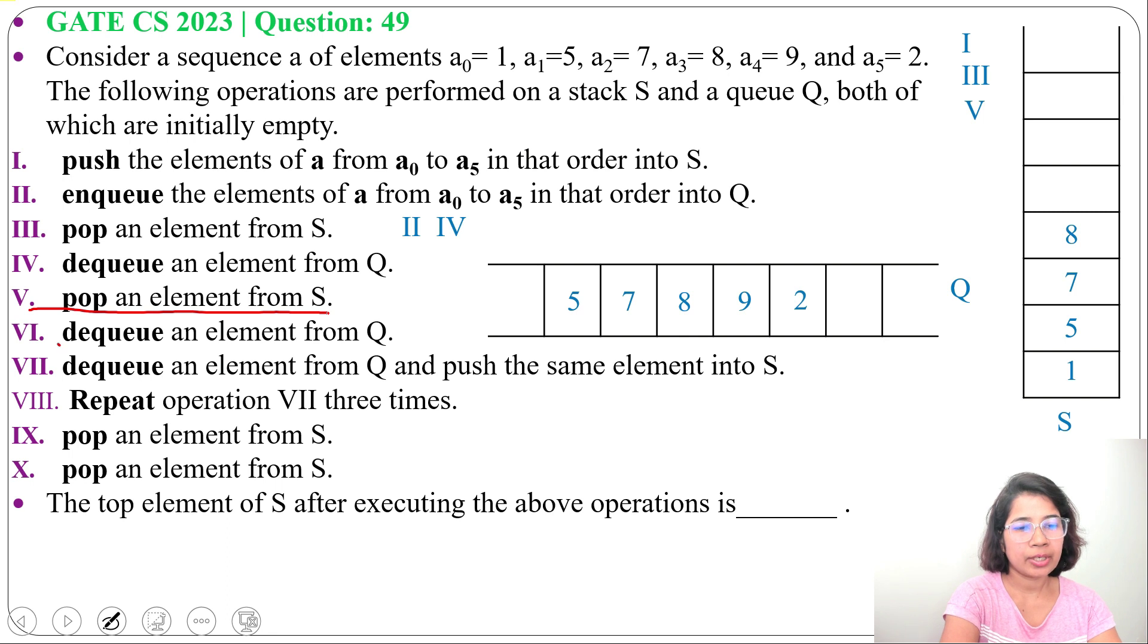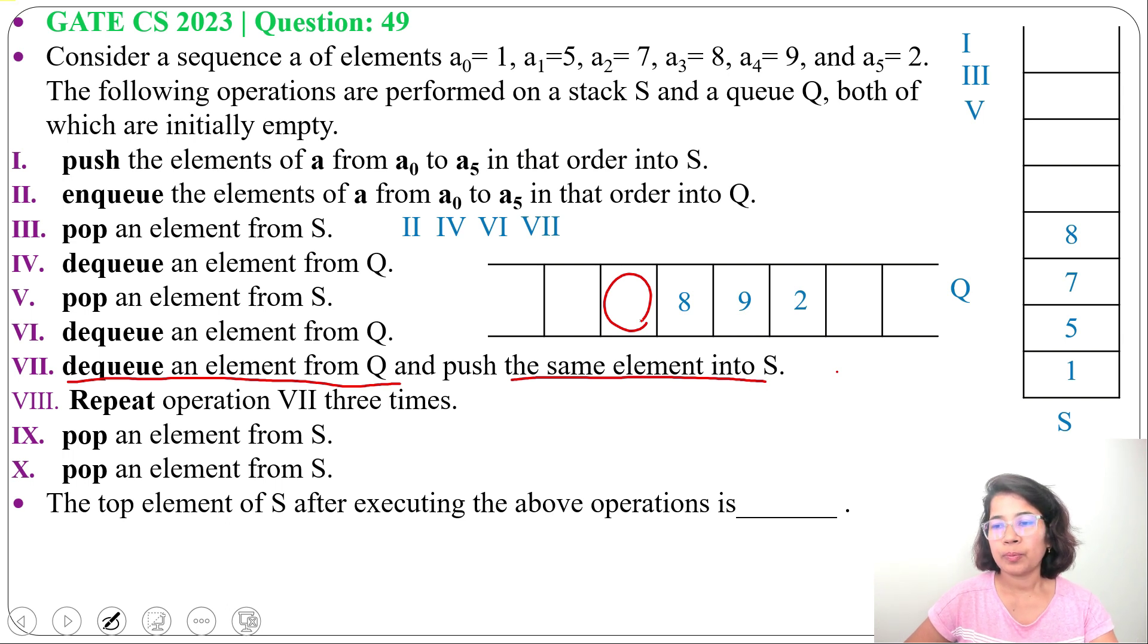Next, 6th operation: dequeue an element from Q. So at front it's 5, we will dequeue 5 from Q. Next, 7th operation: dequeue an element from Q and push the same element into S. So we will dequeue 7 and we will push 7 into stack. So let me first dequeue 7, then we will push 7 into stack.